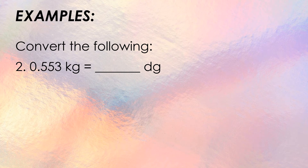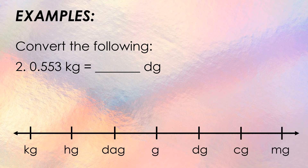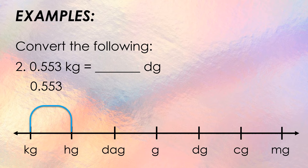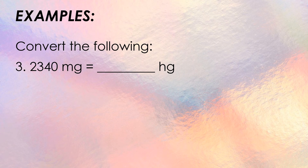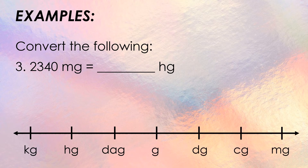Second example: 0.553 kilograms is how many decigrams? Using the metric system, convert 0.553 kilograms to decigrams. From kilogram to decigram, we move to the right: one, two, three, four — four places. Move the decimal point four places to the right, filling any empty space with a zero. Therefore, 0.553 kilograms is equal to 5,530 decigrams.